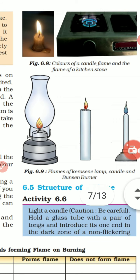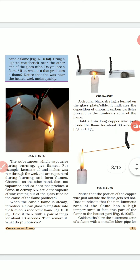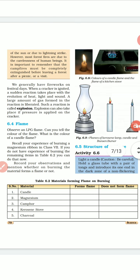Why is it so? We will now study the structure of a flame. Light a candle, then hold a four to five centimeter long thin glass tube with a pair of tongs and introduce one end into the dark zone of the candle as shown in the figure.